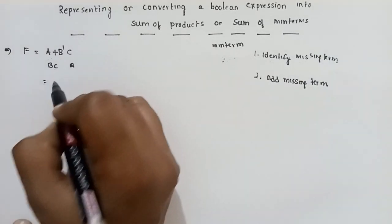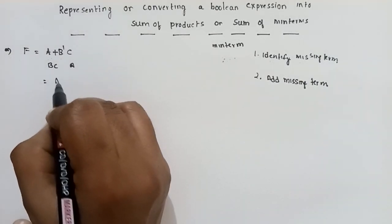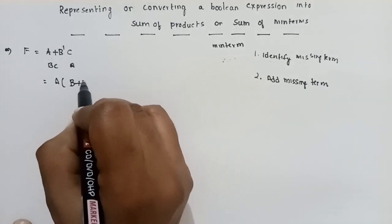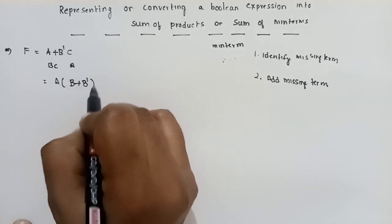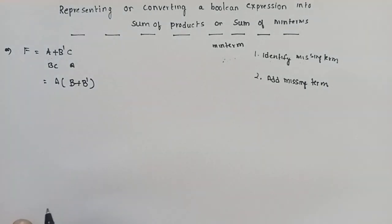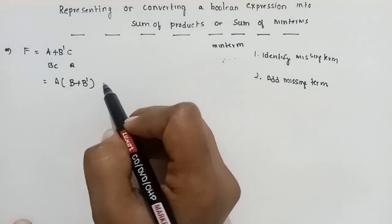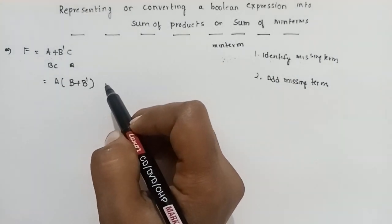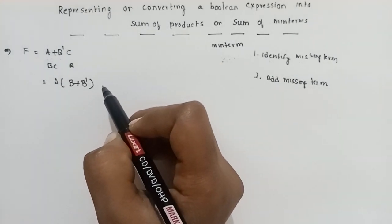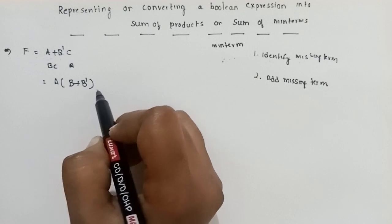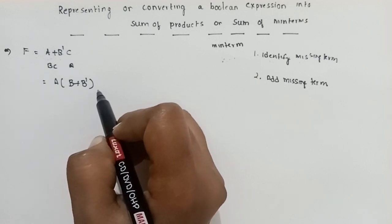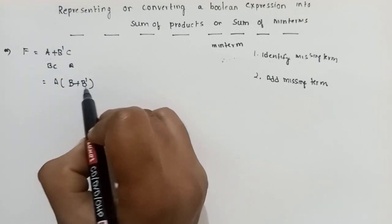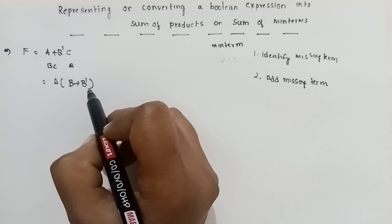Here, BC. I will show you some of the products — B plus B dash. In the previous video, the properties are loss of a Boolean expression. Now, B plus B dash value is 1. So anything into 1 is the value of the change.